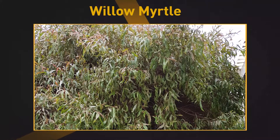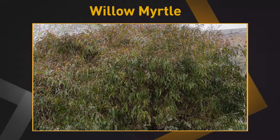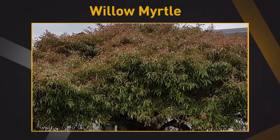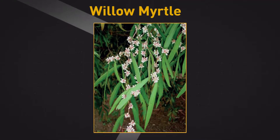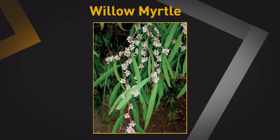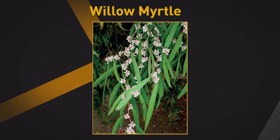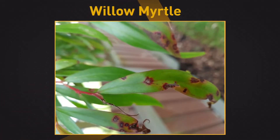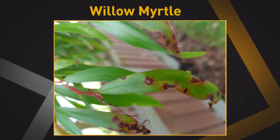Willow myrtle. A small and robust tree, usually less than 10 meters tall. It has fibrous brown bark, long narrow dull green leaves and tightly clustered small white flowers. Willow myrtle flowers between August and September. Willow myrtle with myrtle rust has raised pustules and red-brown lesions.